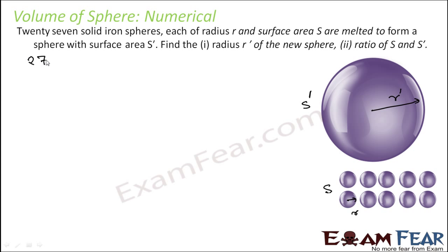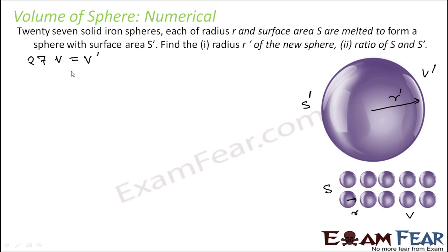What remains constant when spheres are melted? Volume. So 27 times the volume of each small sphere equals the volume of the bigger sphere. That is: 27 × v = v′. The volume is constant — this is the key concept here.